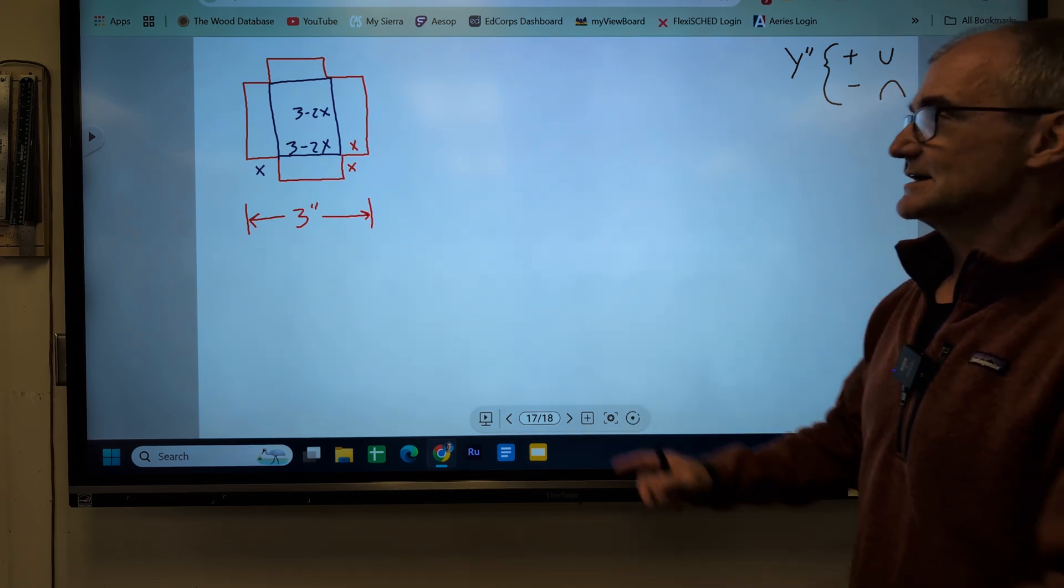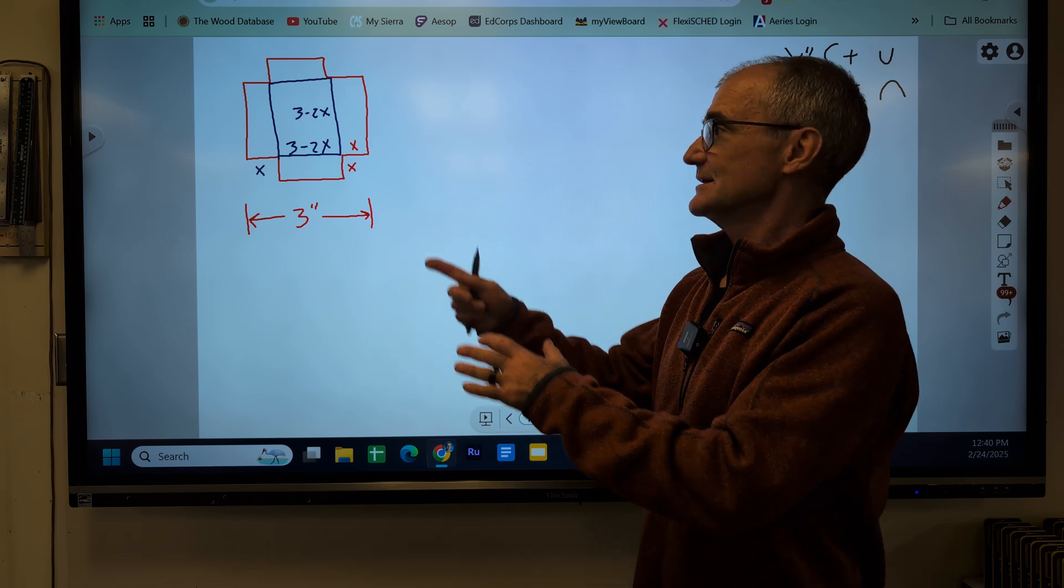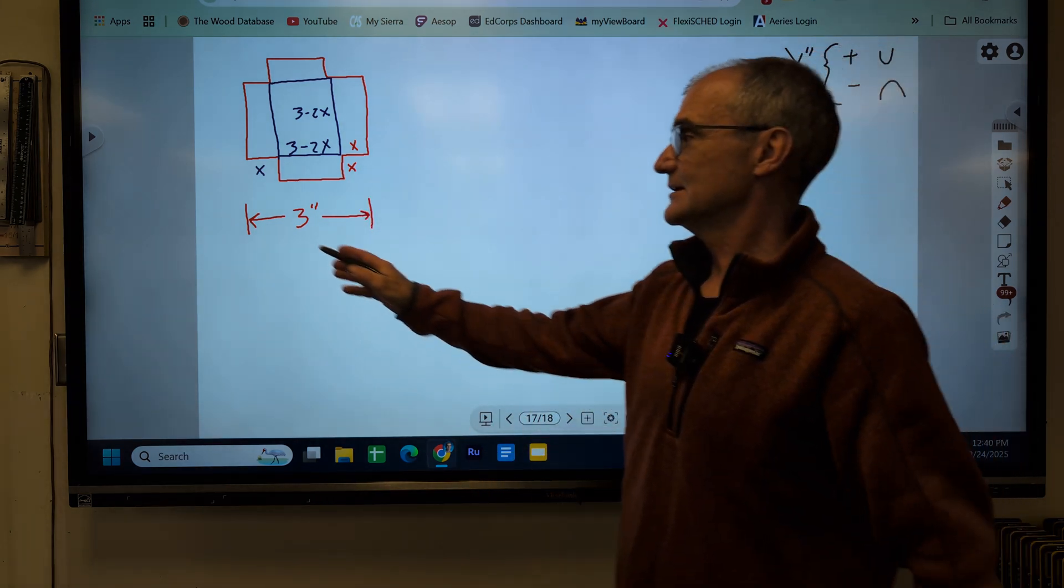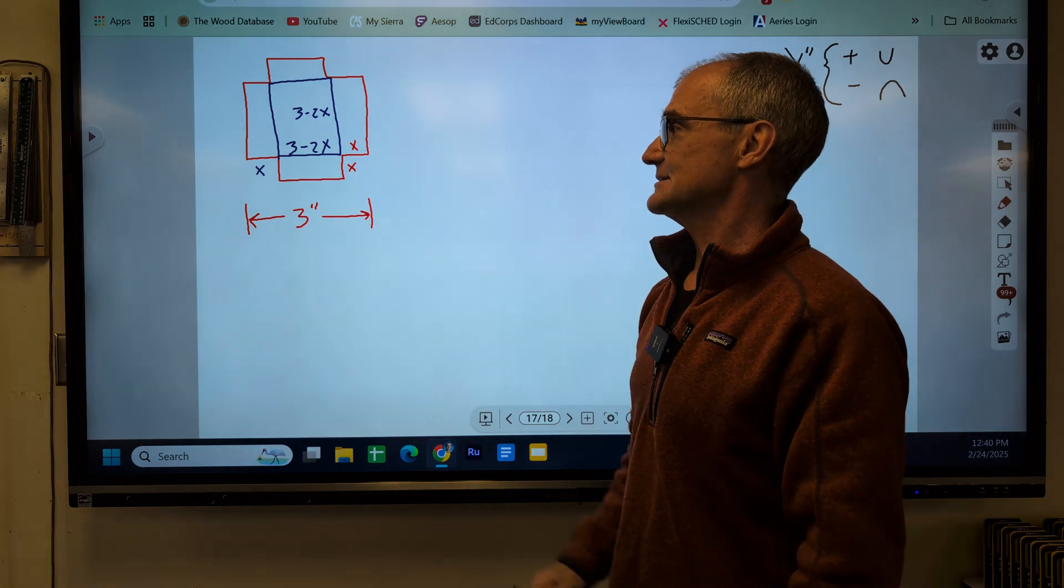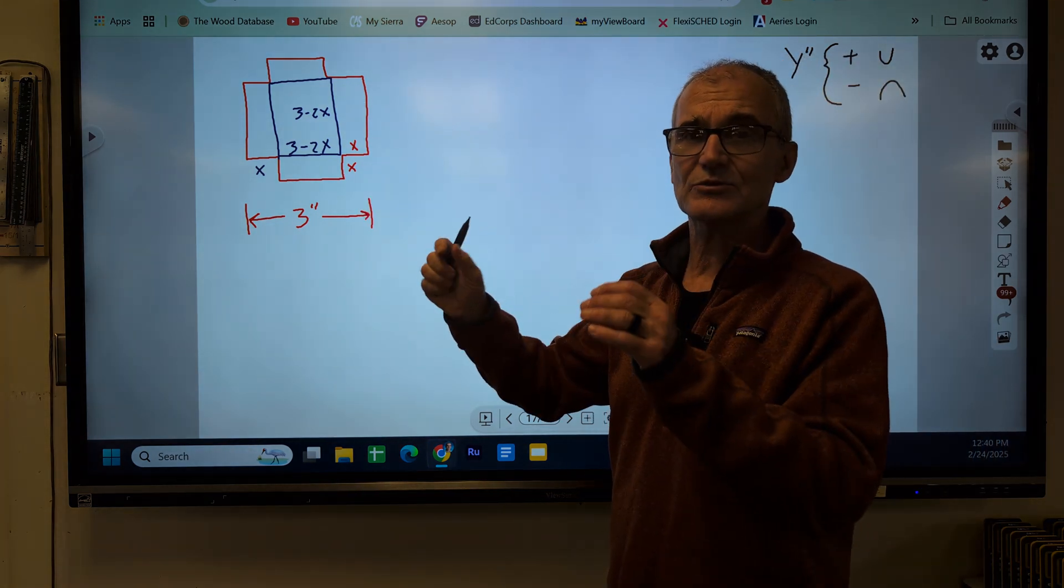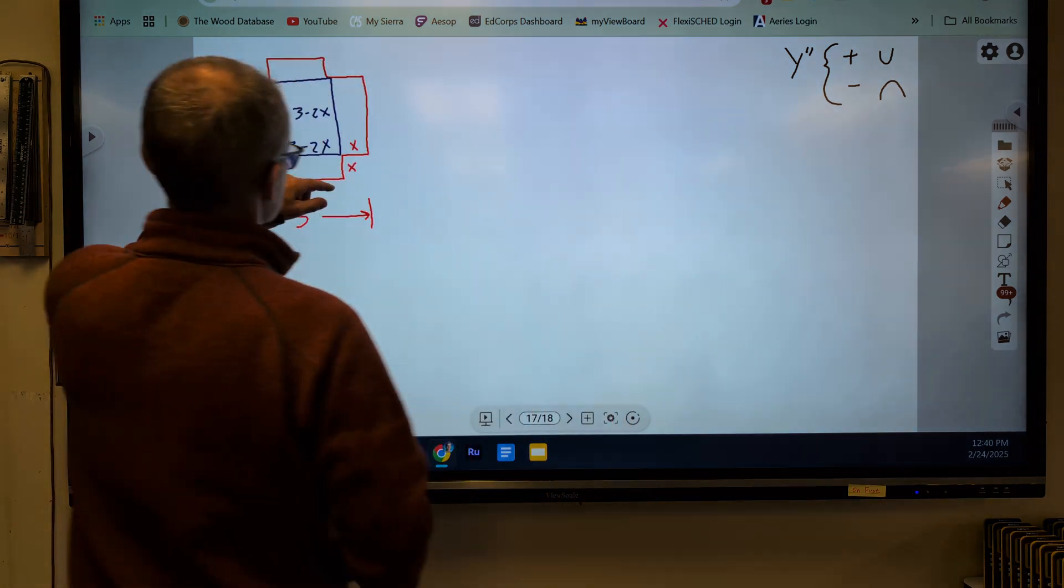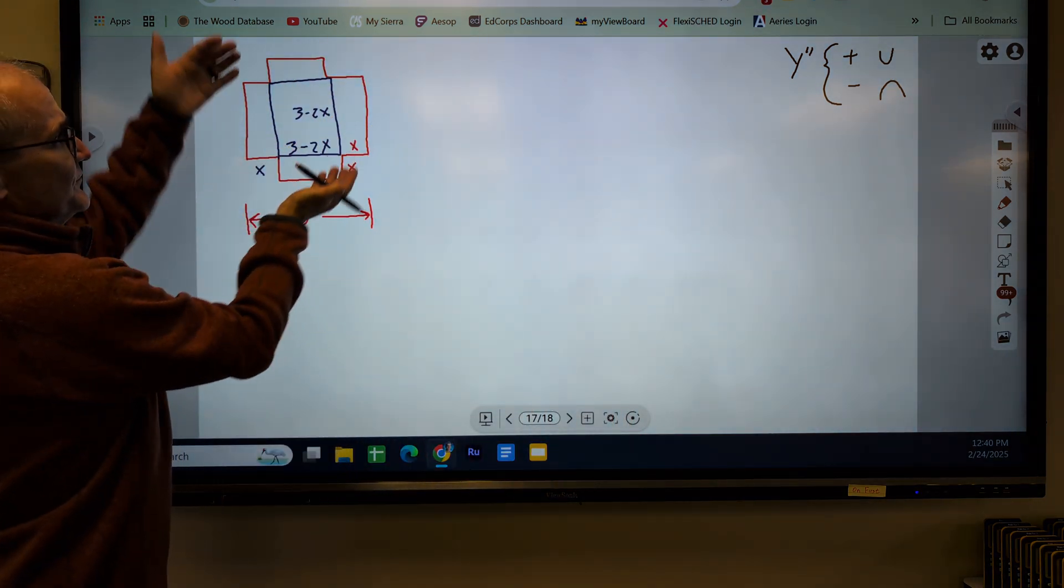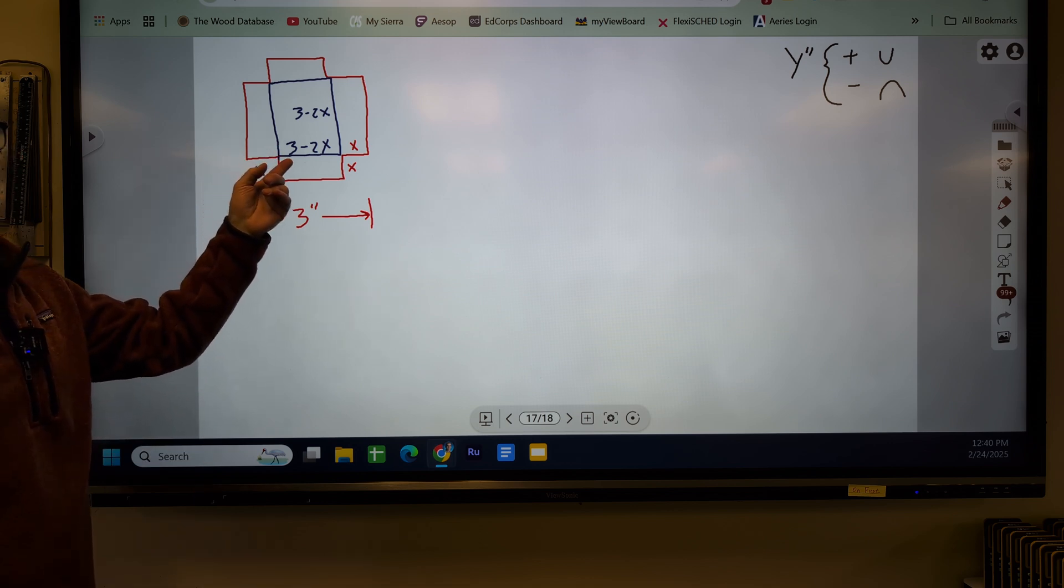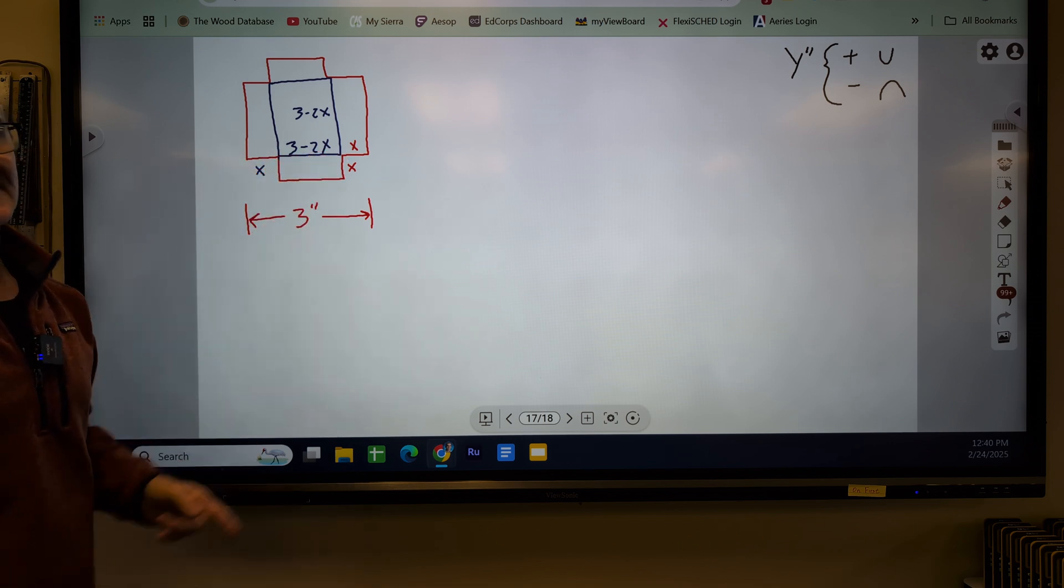So the problem is, can you maximize the volume in this box? So let's say I have a piece of cardboard, 3 inches by 3 inches, and I want to cut something out of the corners. I want to cut these corners out so this cardboard will fold up into a box. So I want to maximize the volume of this and I want to know how much to cut out.